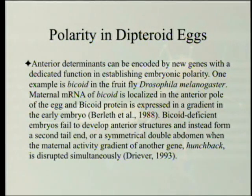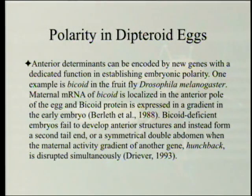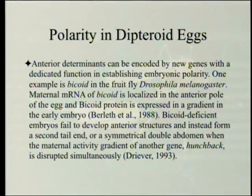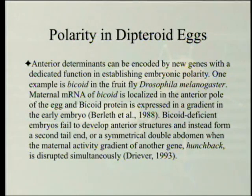Anterior determinants can be encoded by new genes with a dedicated function in establishing embryonic polarity. One example is bicoid in the fruit fly Drosophila melanogaster. Maternal mRNA of bicoid is localized in the anterior pole of the egg, and bicoid protein is expressed in a gradient in the early embryo. Bicoid-deficient embryos fail to develop anterior structures and instead form a second tail end, or a symmetrical double abdomen when the maternal activity gradient of another gene, hunchback, is disrupted simultaneously.